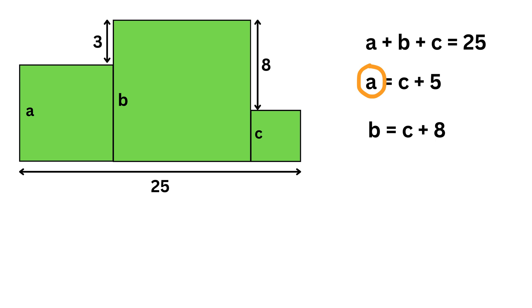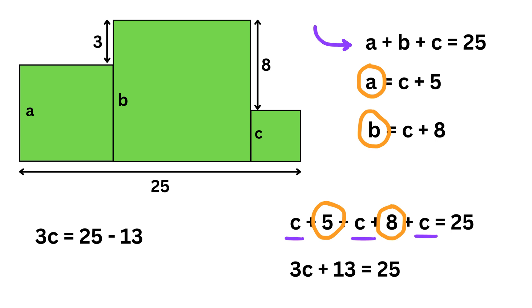Now substitute this A in terms of C and this B in terms of C here to get C plus 5 plus C plus 8 plus C equals 25. This will give us 3 times C and this will give us 13 and that equals 25. So 3C equals 25 minus 13 or 12 and thus C equals 12 over 3 or 4.